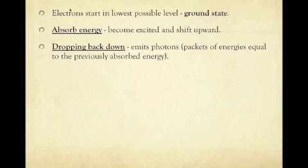As those electrons receive energy, the electron starts in the ground state, which is the lowest possible energy level. It absorbs energy and becomes excited and shifts upward to a higher energy level. Then when it drops back down to the ground state, it emits a photon, which is a packet of energy equal to the previously absorbed amount. Energy has to follow the law of conservation of energy—energy is neither created nor destroyed—so whatever it absorbs, it'll emit in the same amount as a photon. As that electron jumps to a higher energy level, it absorbs energy, and then as it comes back down, it releases that energy as a photon.